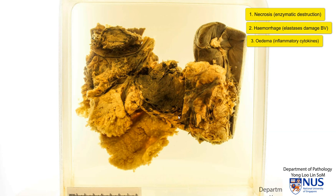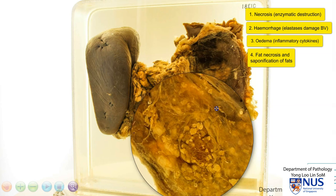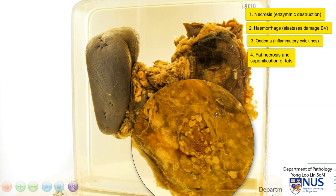In addition, there is also fat necrosis. If we zoom into this area, we can see a number of these chalky whitish deposits. These are actually soaps. This is formed because when lipases act on lipid-containing cells, for example in the omentum or the peripancreatic fat, there is release of fatty acids from the cells, and these combine with calcium in a process called saponification to form soaps.